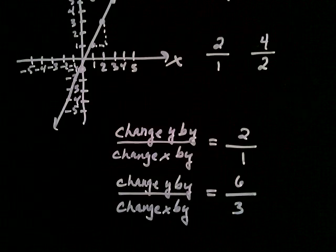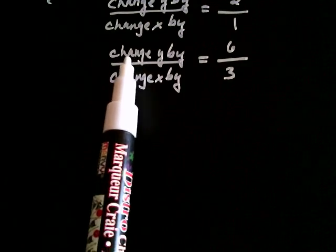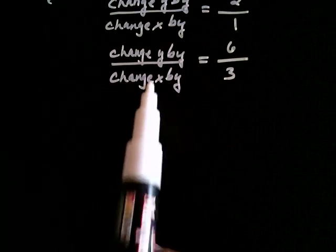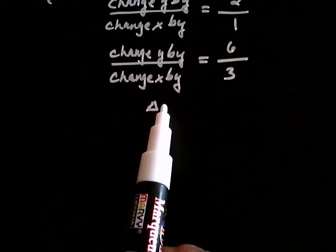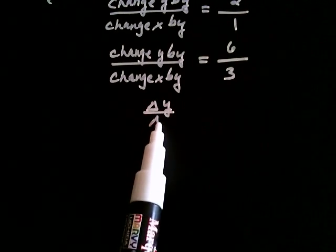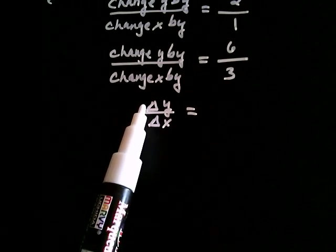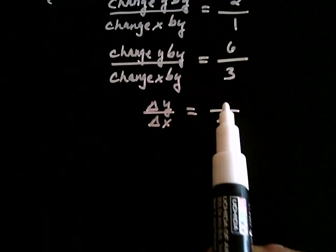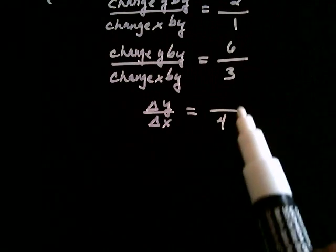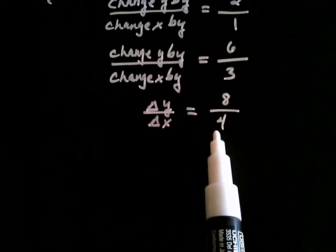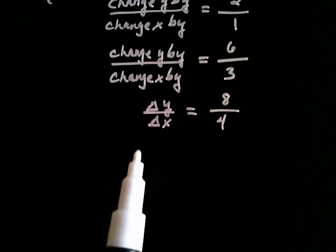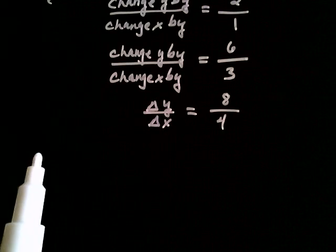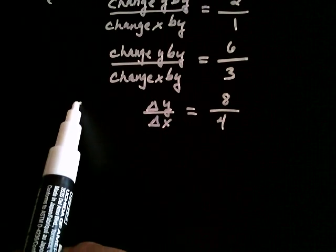We get a little tired of always writing 'change y by' and 'change x by,' so we have a special notation — we call it delta y over delta x. It's the same game: how much you change y by and how much you change x by. So if x changes by 4, what would y change by? That's right — it would be 8. Just like before, if x increases by 4, the y would have to increase by 8. This fraction — the change in y divided by the change in x — that has a special name in math. That's called the slope of a line.